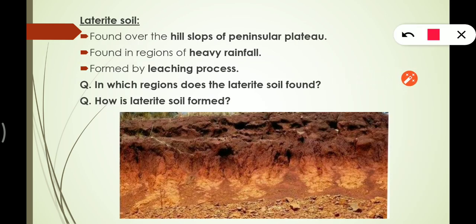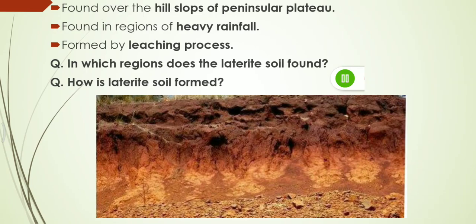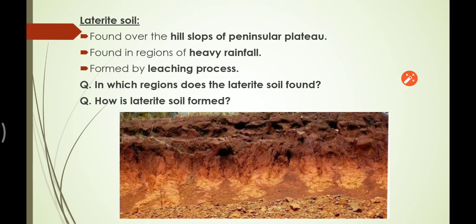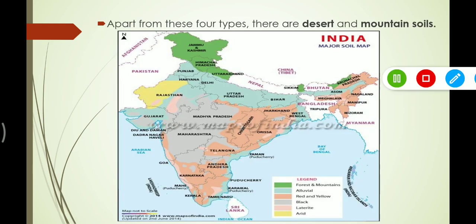Next we have laterite soil. It is found over the hill slopes of the peninsular plateau, in regions of heavy rainfall. It is formed by the leaching process — when rocks break into smaller pieces, this is known as leaching. Key questions: where is laterite soil found? — hill slopes of the peninsular plateau, in areas of heavy rainfall. How is it formed? — by the leaching process.